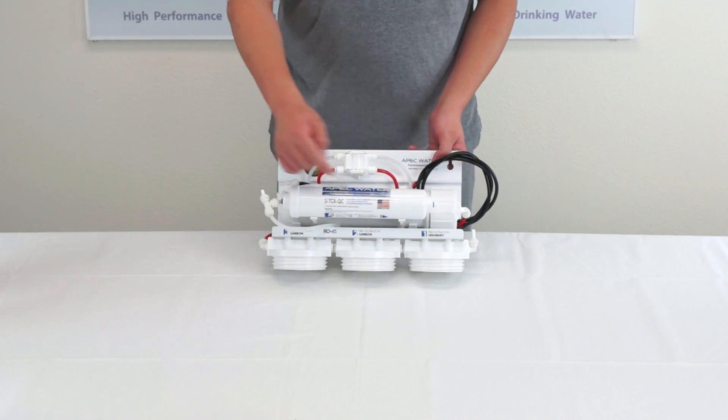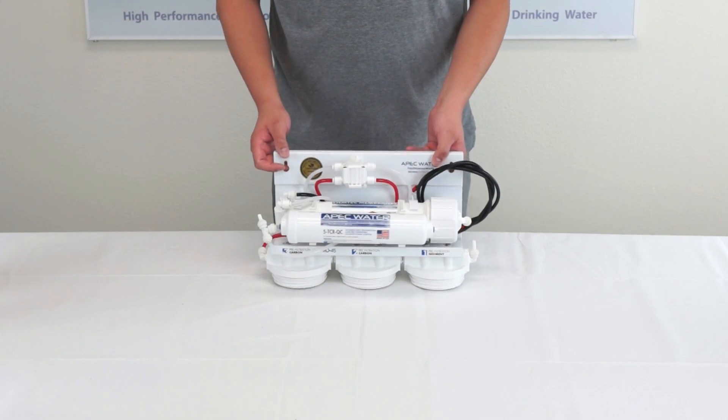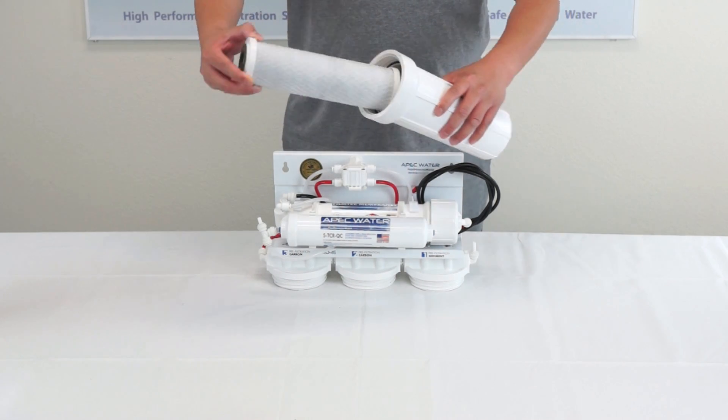On the RO head you will see stage 1, stage 2, and stage 3 labeled on the system. After the filter wrappings have been removed, insert the filters making sure each housing has a rubber O-ring.